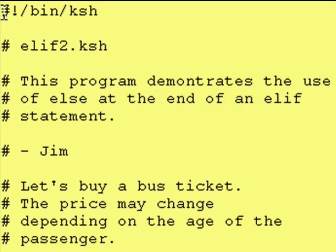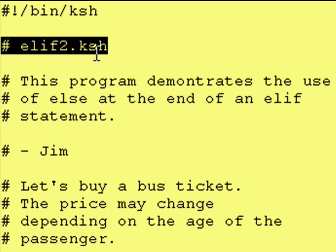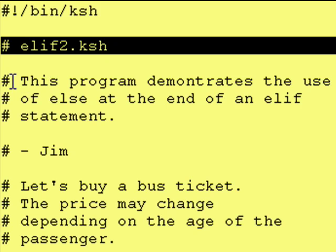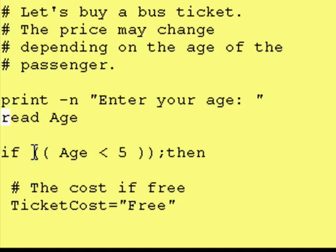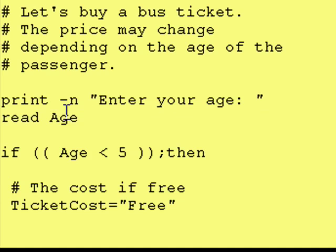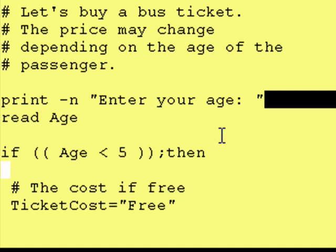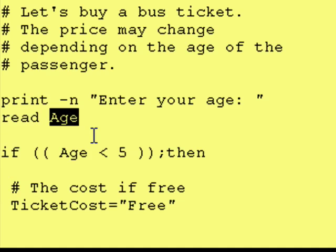Let's get started. As always, pound exclamation point slash bin slash KSH. Name the program, what this program does — this program demonstrates the use of else at the end of an else if statement — and who wrote the program. We're going to go buy a bus ticket, and what we're going to do is prompt the user to enter their age, which we do with the print dash n statement: "Enter your age." The dash n does not put a carriage return at the end of the print statement, because we want the prompt to remain right at the end of the printed statement. Then we read in their response with the read statement and store the value in the variable called age.